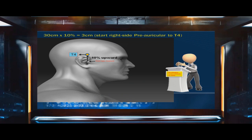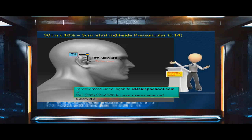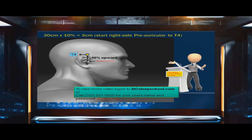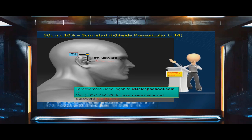First, measure 10% upward from your preauricular point. Example: 30 centimeters times 10% equals 3 centimeters. This will help you find your first location, T4. To view more footage of the International 10-20 System Overview by Ronnie Gill, log on to DCSleepSchool.com or contact Washington Metro Institute of Sleep Technology at 703-521-5500 to retrieve a username and log-on information.